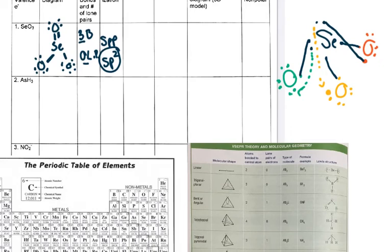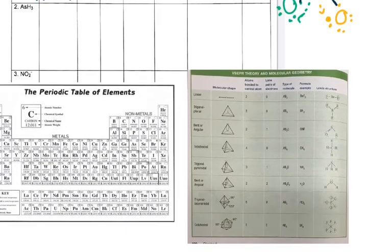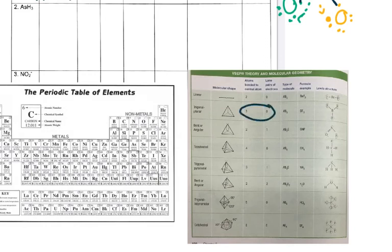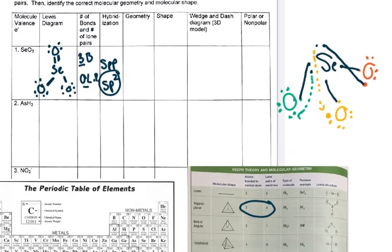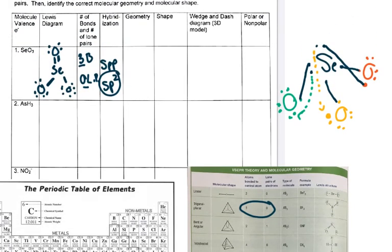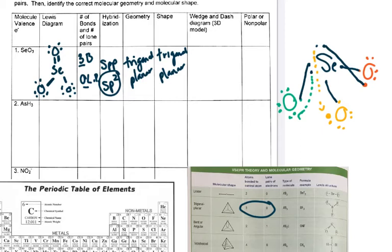With three bonds and no lone pairs, I can look that up on the reference chart. Because I don't have any lone pairs, my geometry and my shape are actually going to be the same — they're both trigonal planar. The only time shape and geometry are different is when we start adding in lone pairs. The wedge and dash diagram is just a 3D diagram. Trigonal planar is all in the same plane, so we don't need to use wedge and dash here. In a wedge and dash diagram, wedges come forward and dashes go backwards.